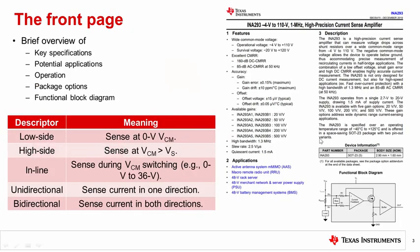The front page of the datasheet allows the reader to quickly determine whether a part could or could not work in their system. Aside from key electrical specifications like offset and IQ, the front page for Current Sense amplifiers, or CSAs for short, can contain key functional descriptors.